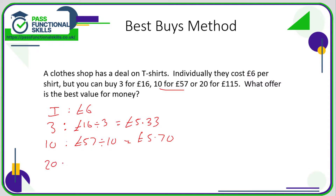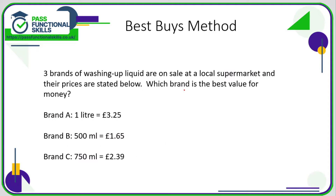A twenty pack is going to be 115 pounds divided by 20, and 115 divided by 20 is five pounds 75. So we can see that the best value for money, at five pounds 33 per item, is the three pack.